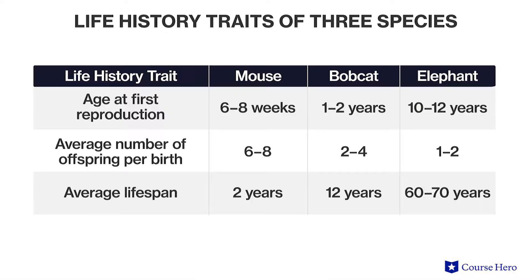Life history traits of a species include the growth rate, age at first reproduction, number and size of offspring, reproductive lifespan, and patterns of aging.